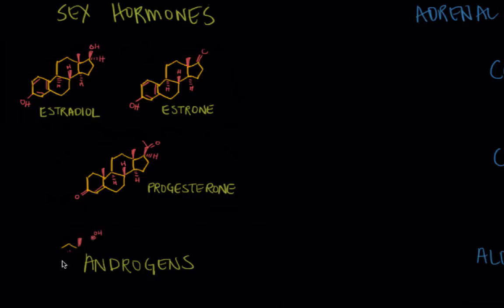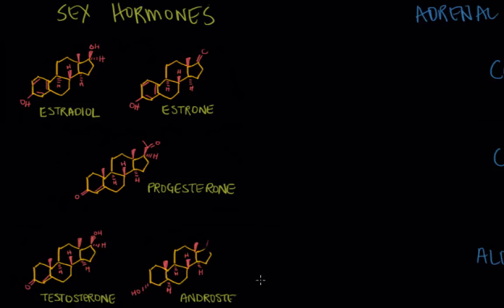And then we have androgens. And we have testosterone and androsterone. And similarly to the estrogens those regulate the secondary sex characteristics but more so in males and they're predominantly made in the testes.